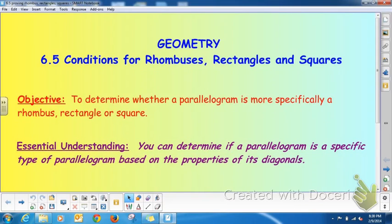Hi, welcome back to Geometry. This is section 6.5, Conditions for Rhombuses, Rectangles, and Squares.